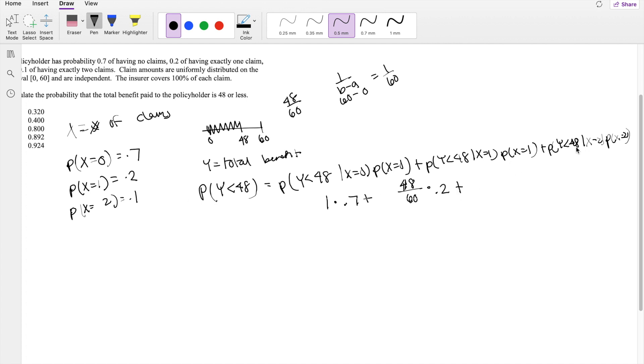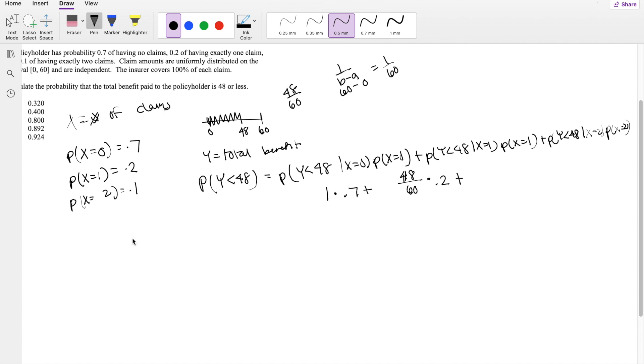And finally, what is the probability that the total benefit is less than 48, given that x is equal to 2? Meaning there are exactly two claims. So if there are two claims, it's going to look like this. So this is 60, this is 60. If first claim has 48, then the second claim cannot have any benefit, right?